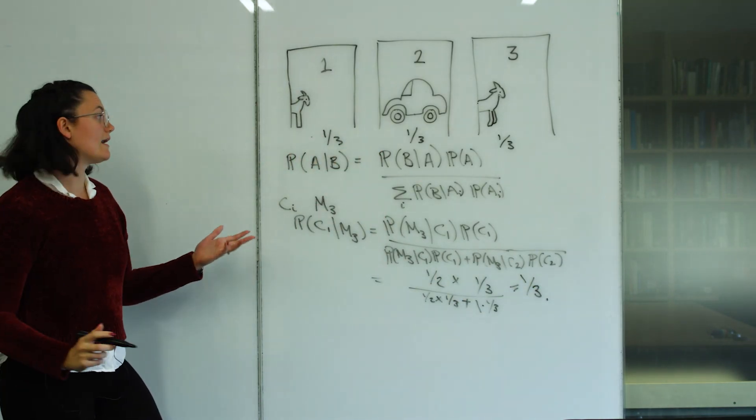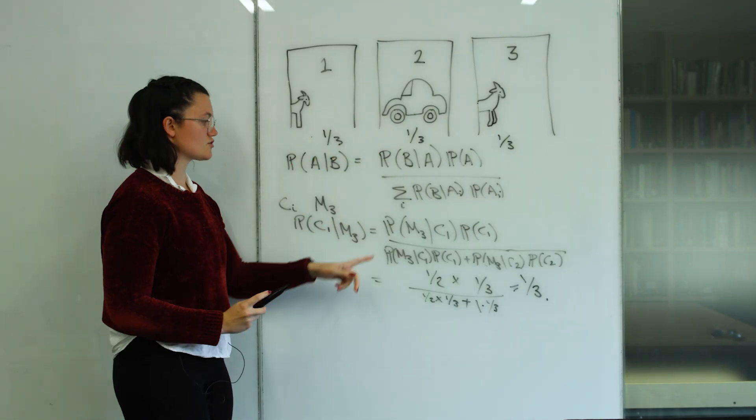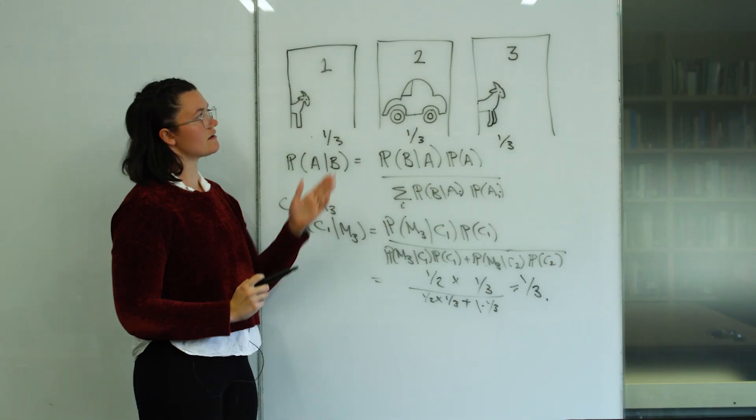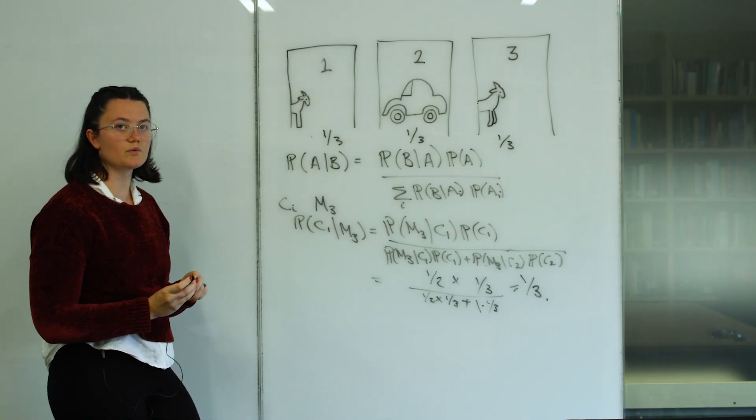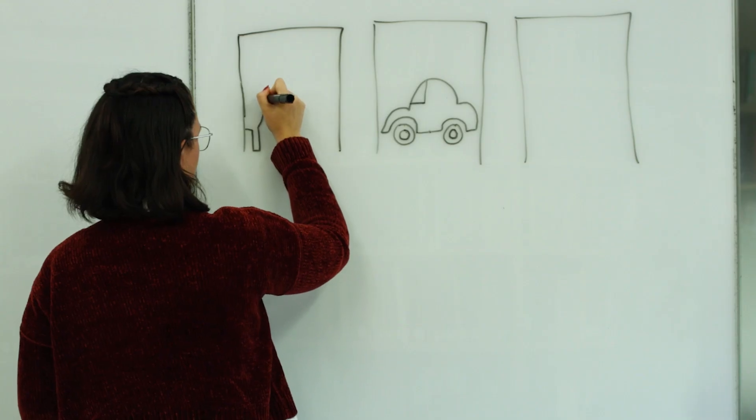And the simplest way now to know what your probability is of finding a car behind door two, instead of door one, is to just do one minus a third, which gives you two thirds, double the probability of the car being behind door two, rather than door one. I've forgotten how to draw a goat like this. It has a horn.